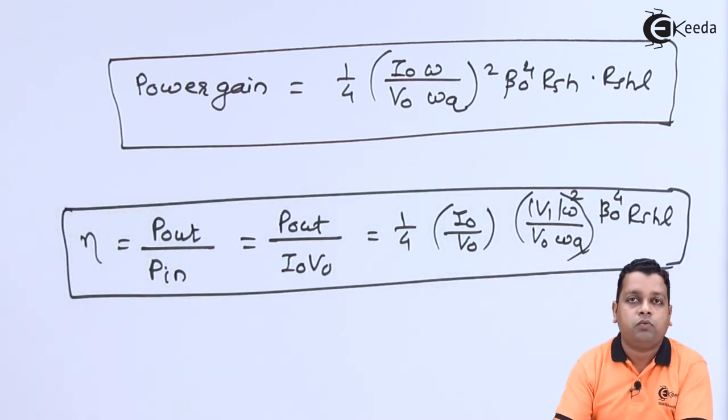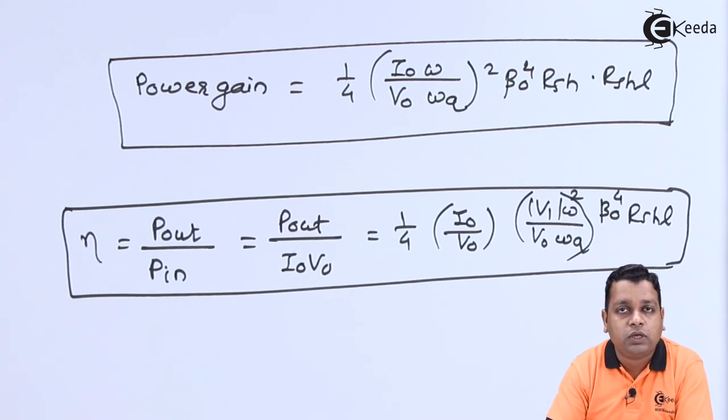So these are the very important formulae with respect to the two-cavity klystron amplifier for the output current and the output power.